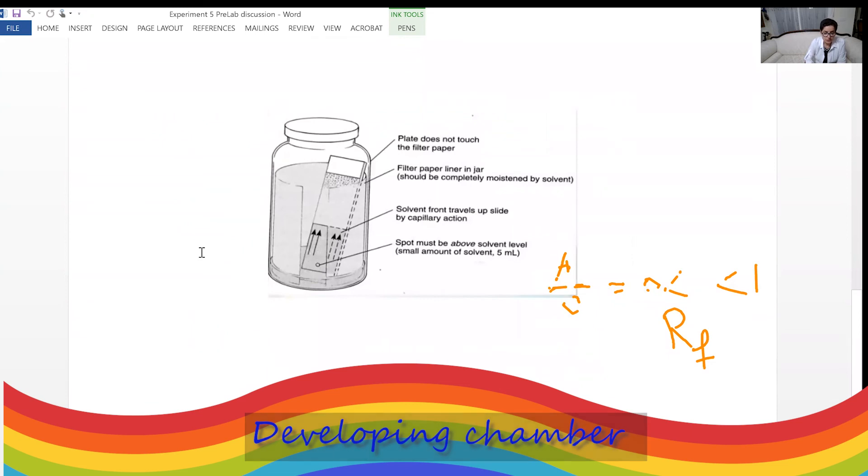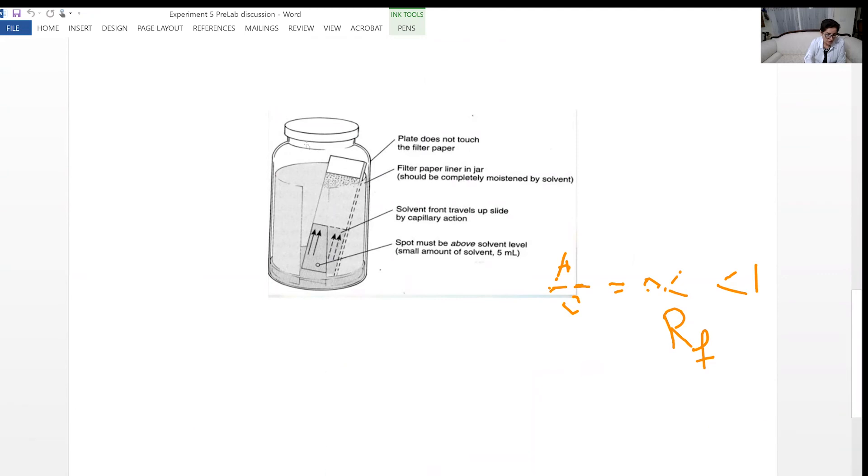This diagram here, it shows the developing chamber. For the developing chamber, we like to make sure that a jar works perfect because it has a lid. The air inside needs to be saturated with the vapor of the developing solvent. And I also add this filter paper inside, which allows evaporation before you put the TLC plate. And that helps with the saturation of this air inside the container with the vapor of the developing solvent.